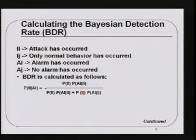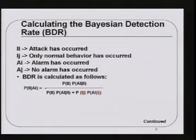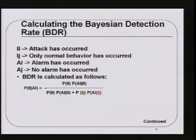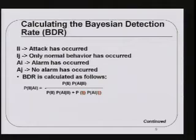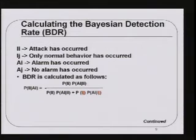The Bayesian detection rate can be readily calculated. Let's say we have an event I-sub-i, meaning an attack has actually occurred, and I-sub-j meaning there is no attack — this is normal network behavior. A-sub-i means an alarm has occurred, and A-sub-j means no alarm whatsoever has occurred. You can then calculate the Bayesian detection rate using the formula.